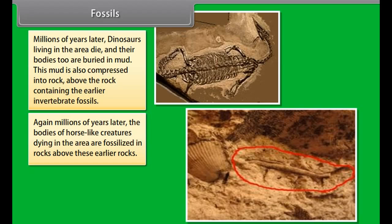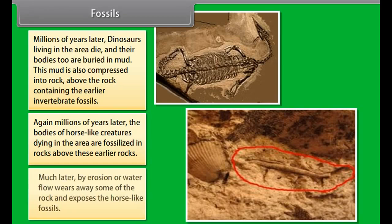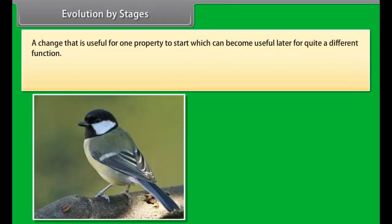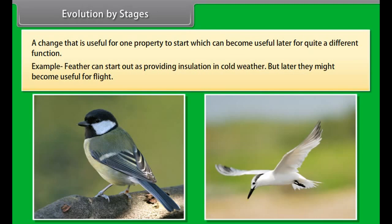The remains of dead animals or plants that lived in the remote past are known as fossils. Ammonite invertebrate, Nicaea fish, and Rajasaurus dinosaur are some examples of fossils.